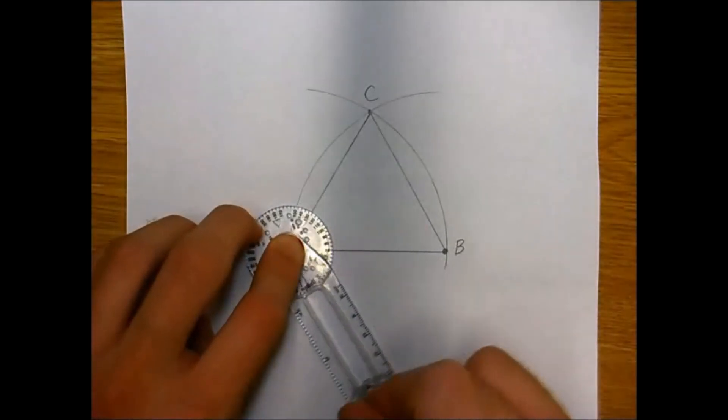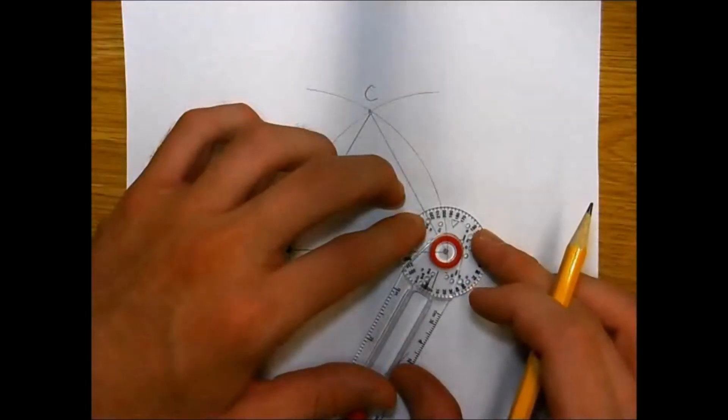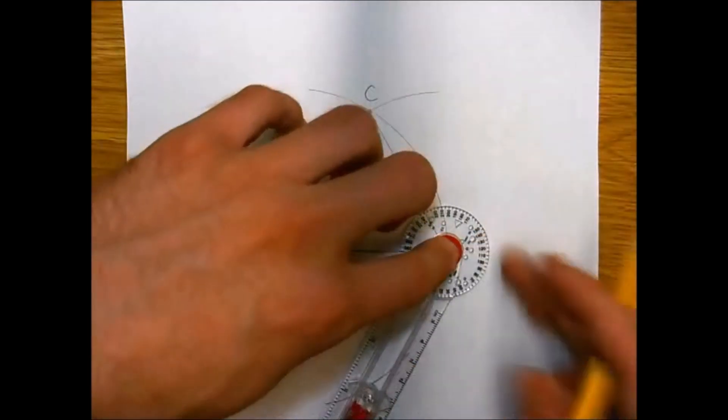For the next part, we keep the compass the same length. We're going to start from point A and swing an arc below, and we're going to repeat that from point B.